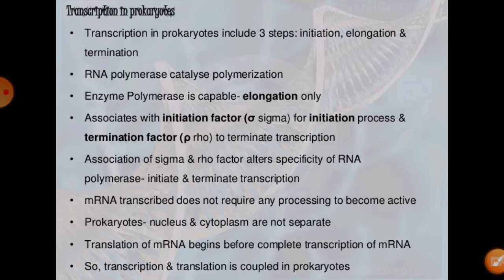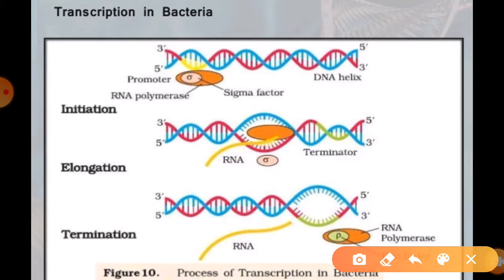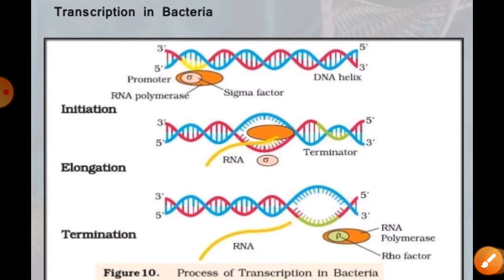Let's discuss transcription in prokaryotes — how this process takes place in prokaryotes. There are at least seven steps, following initiation, elongation, and termination. A single DNA-dependent RNA polymerase catalyzes the transcription of all types of RNA in bacteria. The RNA polymerase binds to the promoter and initiates transcription. It uses nucleoside triphosphates as substrate for polymerization in a template-dependent fashion, and also facilitates the opening of the helix and continues elongation.